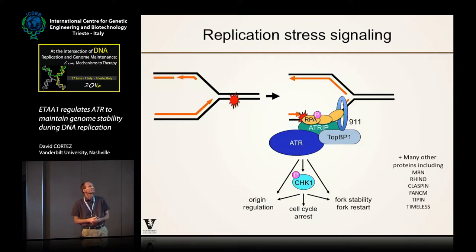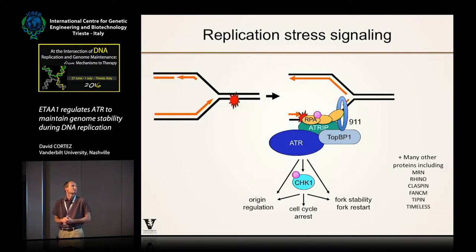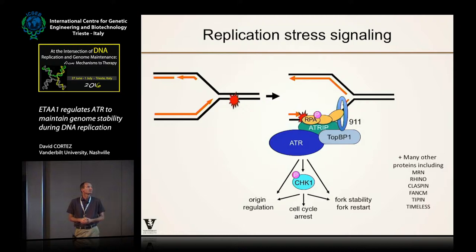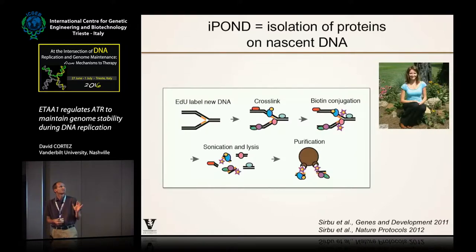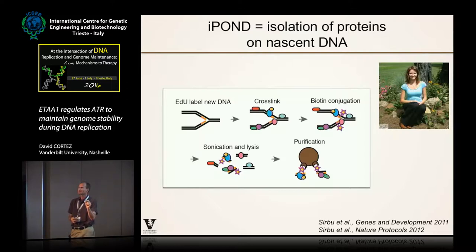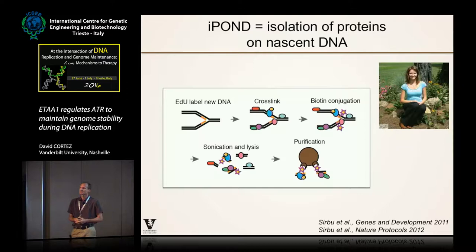There are many other proteins involved in this pathway that I'll skip over. We've been interested in how this pathway works and what it does to stabilize replication forks, control cell cycle, and DNA repair. One of the things we tried to do, a few years ago, motivated in part by the same reason Tony was interested in making a site-specific lesion, was to develop a method to look at proteins at stalled replication forks in human cells.